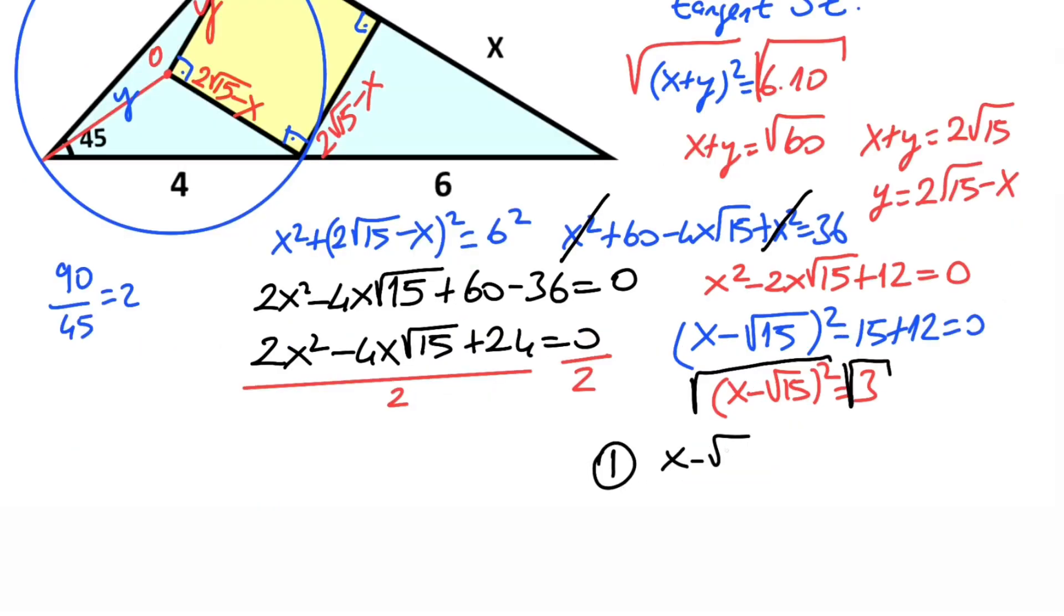First one: x minus root 15 equals root 3, so x must equal root 15 plus root 3. And second one: x minus root 15 equals minus root 3, so x equals root 15 minus root 3.